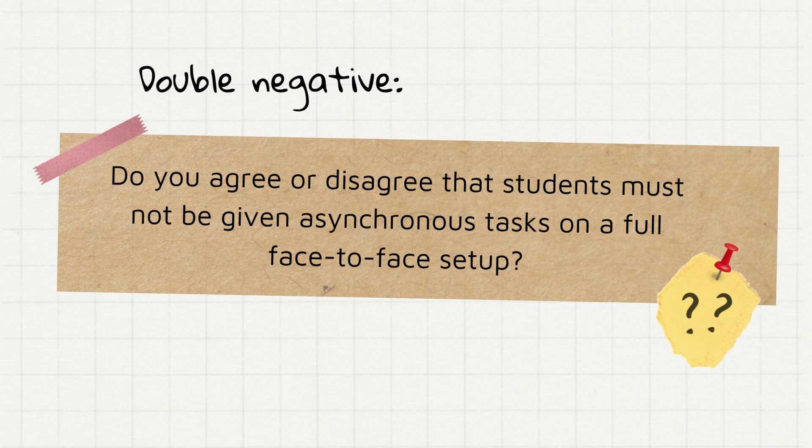Do you agree or disagree that students must not be given asynchronous tasks on a full face-to-face setup? There are two negative words here, disagree and must not be given. This is already very confusing and respondents are compelled to qualify their response because of the two negatives. In order to improve this, you may just stay on the affirmative construction. Should students be given asynchronous tasks on a full face-to-face setup? By eliminating the negatives, you are clearing the discussion up and the participants could easily answer with a yes or a no.